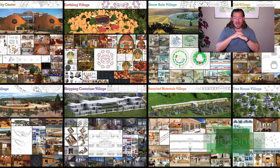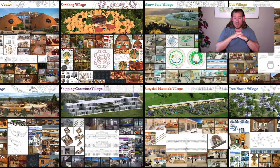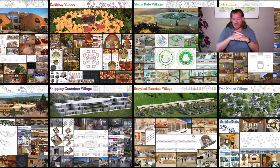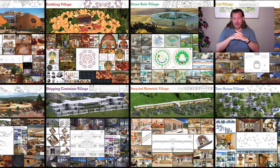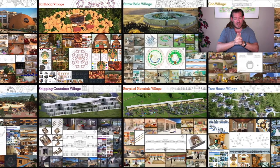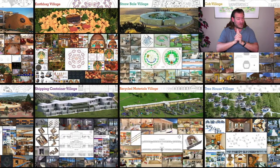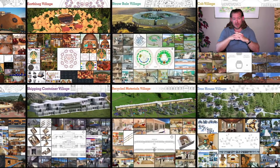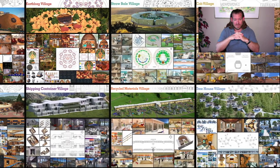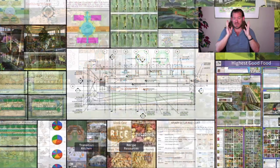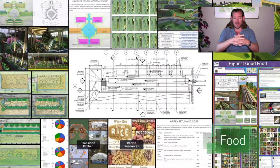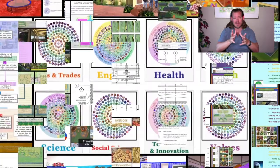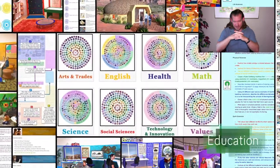One Community is bringing together people with the consciousness and the desire for the highest good of all life on this planet to build sustainable, regenerative, and self-replicating teacher demonstration hubs as a pathway to global sustainability. This is our August 15th, 2021 edition of our Weekly Progress Update, and today's topic is Human Sustainable Ecosystem Design.